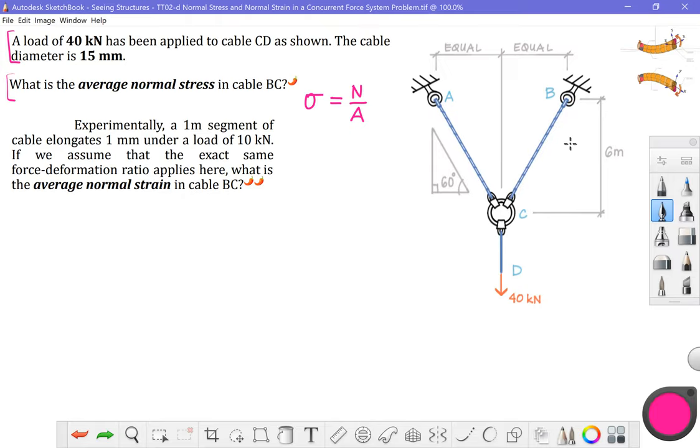Number three, statics analysis. So in order to counteract the effect of that 40 kilonewton load pointing down, I'm going to need to have tensile forces in these two inclined cables for equilibrium. So we're going to work here on the average normal stress. And then we'll come and read the second part of this problem right after that.